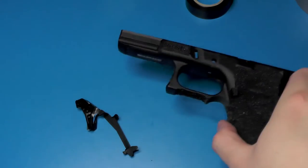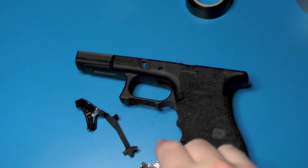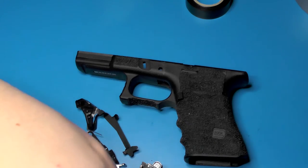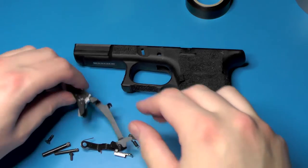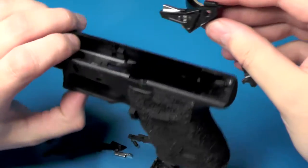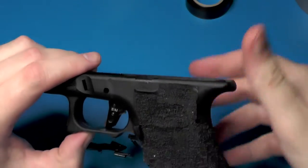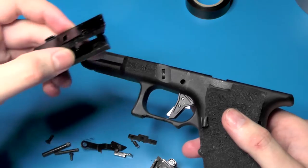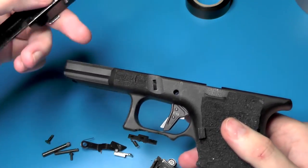So to get this all back together, see if we can get all the parts in here. We're going to start by dropping in the trigger into the frame. That's because the trigger doesn't go in if the inner frame is already in place.